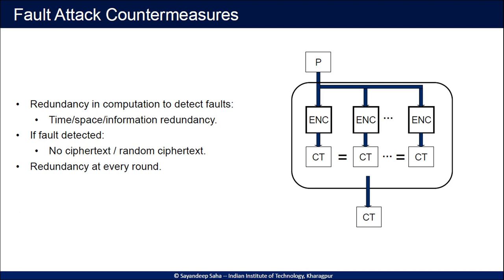When attacks exist, countermeasures also exist. Most fault attack countermeasures use some form of redundancy in computation to detect faults. Redundancy can be two-way or n-way and can be applied at every round or at the end of the entire computation. It can be implemented temporally — encrypting the same plaintext twice and comparing results — or spatially with two redundant branches computing in parallel. There can also be information redundancy using error correcting or error detection codes. If a fault is detected, no ciphertext is output, or a randomized or completely random string is returned.